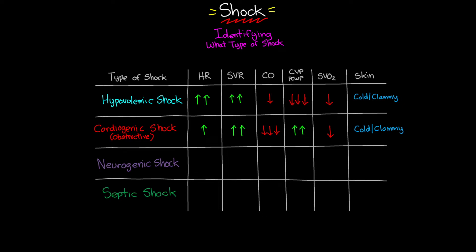With neurogenic shock: we no longer have sympathetic innervation of the heart while parasympathetic activity is maintained, so we actually see a decrease in heart rate — the body is unable to compensate for changes in blood pressure. We've also lost sympathetic vasoconstriction, so SVR decreases. Cardiac output may stay about the same but can also decrease. With massive vasodilation, blood pools and doesn't return to the heart, so preload indicators decrease.